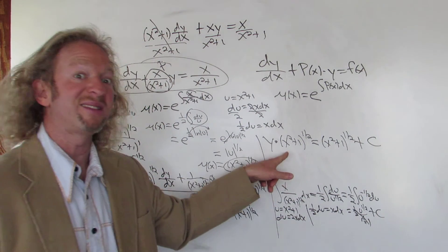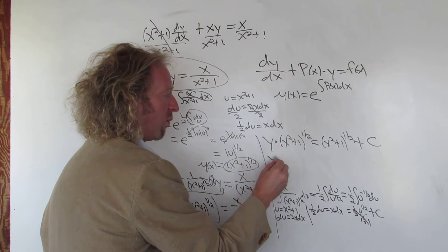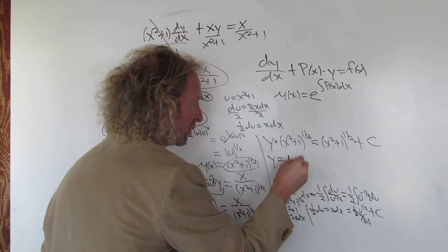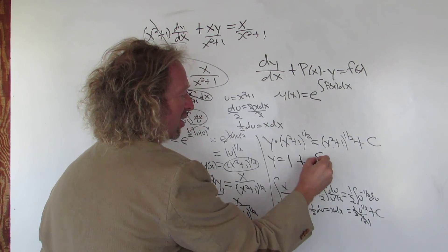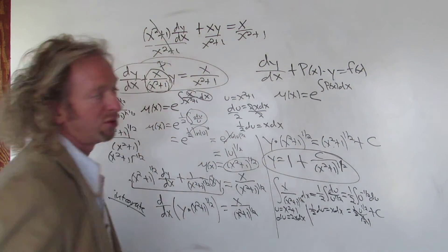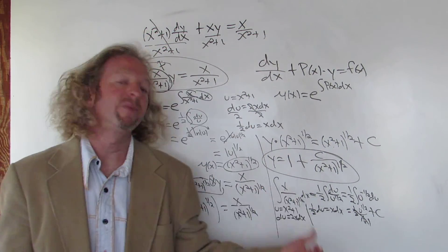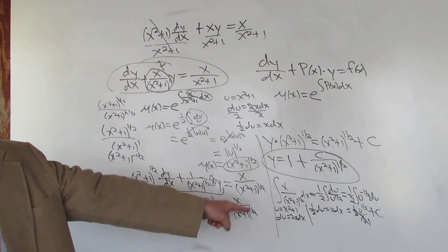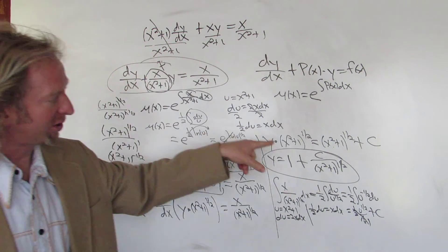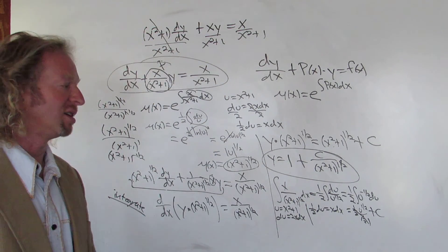Now we divide both sides by (x²+1)^(1/2). On the left we get y. On the right, (x²+1)^(1/2) divided by (x²+1)^(1/2) is just 1, plus c/(x²+1)^(1/2). So y = 1 + c/(x²+1)^(1/2). That's the solution. This is the general solution to the differential equation, meaning it represents every single solution — one for each choice of c, so there are infinitely many solutions.